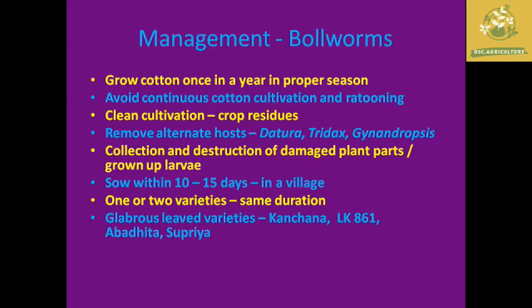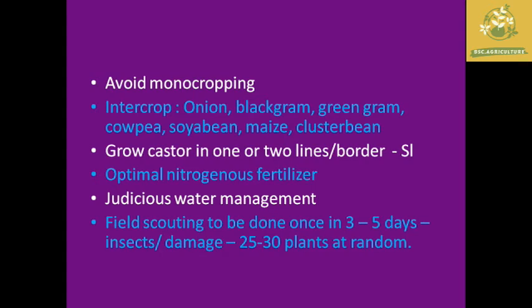Growing cotton once a year in the proper season is the best management practice. Clearing crop residues and collecting and destroying damaged plant parts or grown-up larvae is effective. Planting of the same short-duration variety in a village helps reduce spread. Glabrous-leaved varieties like Kanchana, LK-861, Abhadipa, and Supriya can be used, as they tolerate the presence of boll worms.